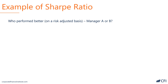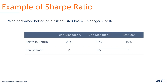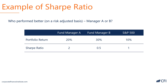Let's look at an example of a Sharpe Ratio for measuring performance. Which manager performed better on a risk-adjusted basis — fund manager A who earned 20% or fund manager B who earned 30%? By looking at their standard deviations, we can determine their Sharpe Ratios. Fund manager A had a ratio of 2, and manager B had a ratio of 0.5. If we care about risk-adjusted returns, then fund manager A did better. If we don't care about risk-adjusted returns and only the absolute highest possible return, then we may choose fund manager B.